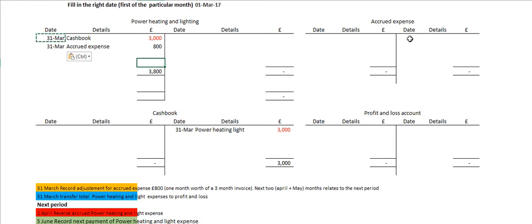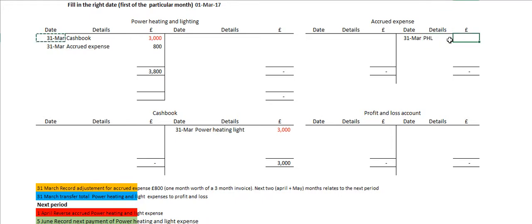Within the accrued expense account we are going to record this as well. So on the 31st of March, power, heating and light, £800. We have now generated an accrued expense account of £800.